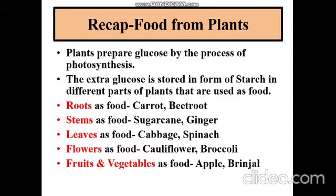Then coming to stem, we have examples like sugarcane and ginger. Ginger is an underground stem. Then we have leaves like cabbage and spinach, flowers like cauliflower and broccoli, fruits like apple, and vegetables like brinjal.